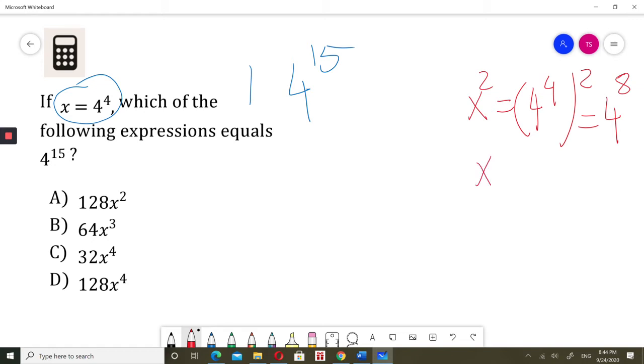Okay, what would be x cubed? x cubed would be 4 to the power of 4 to the power of 3. We multiply powers when it's power to the power. So, it's 4 to the power of 12.